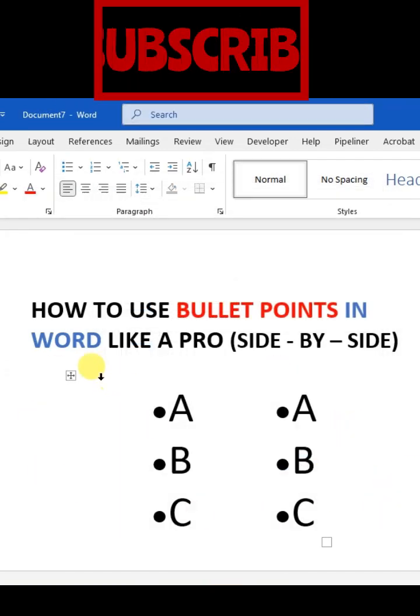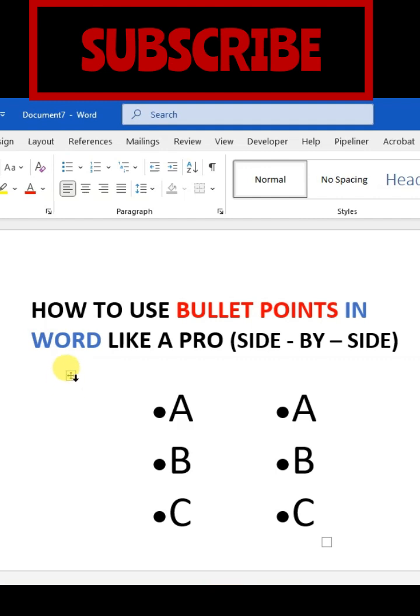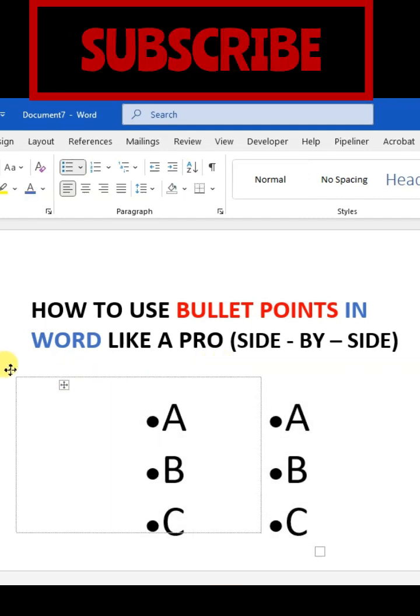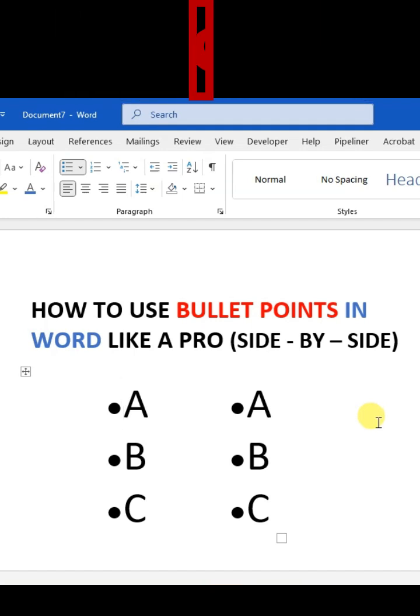Here you can see the border is not showing. Now you can easily drag these bullet lists. Just click on this icon and you can easily move both lists anywhere and set them in your Word document.